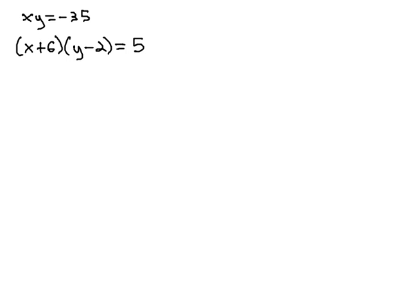In this video, we're going to solve the simultaneous product x times y equals negative 35, and x plus 6 times y minus 2 equals 5, by converting them into a single rational equation which we can solve.